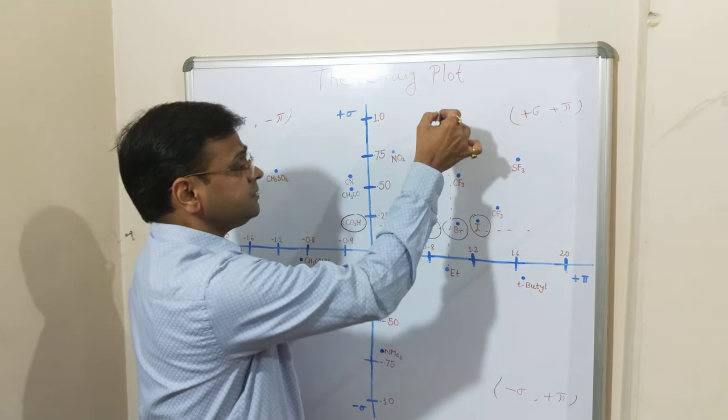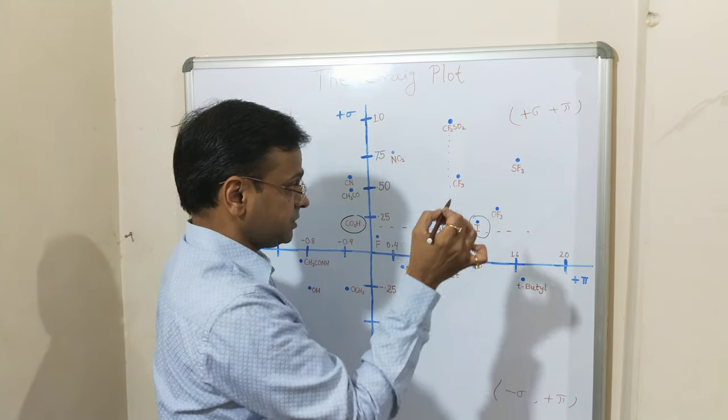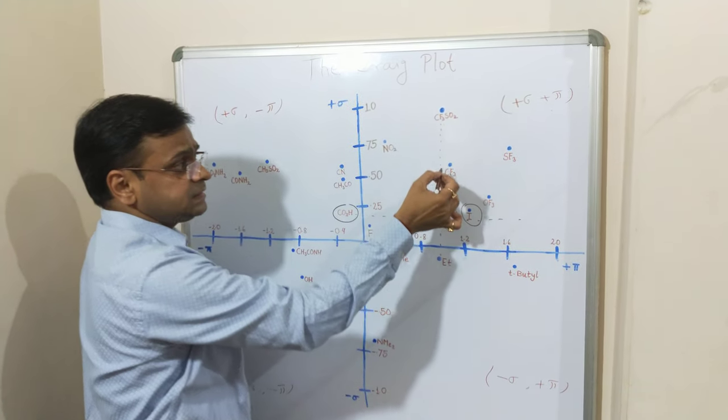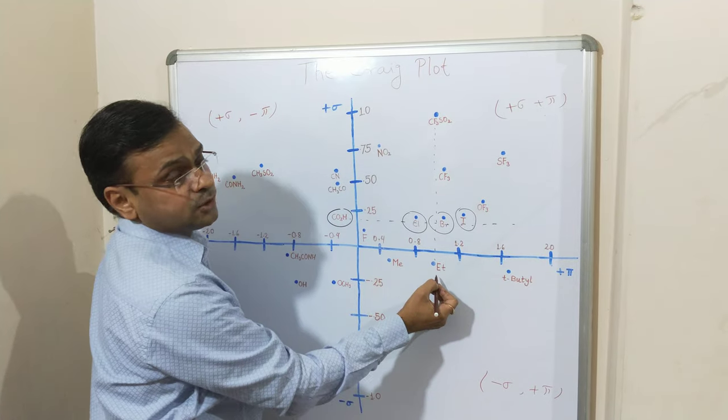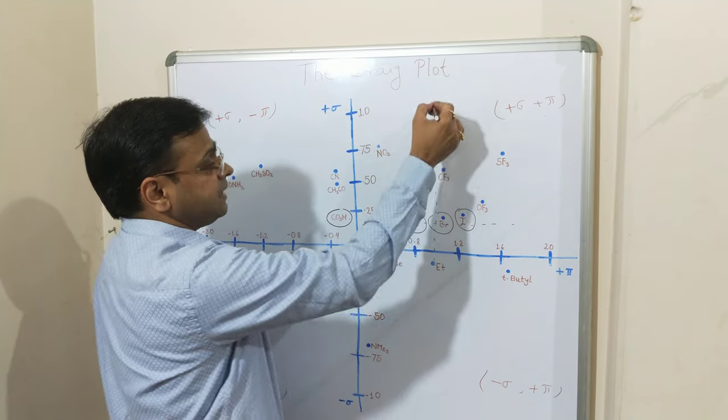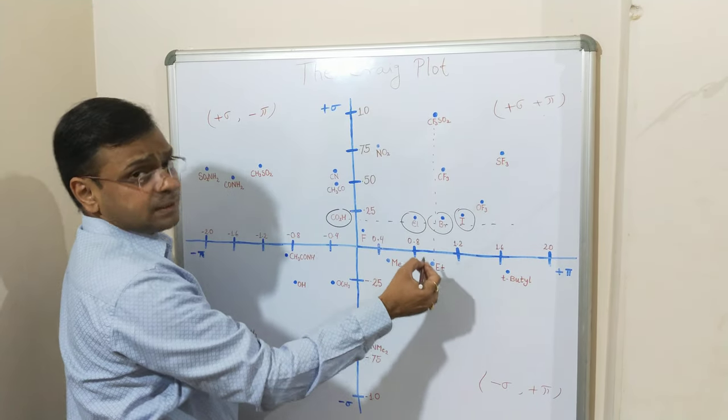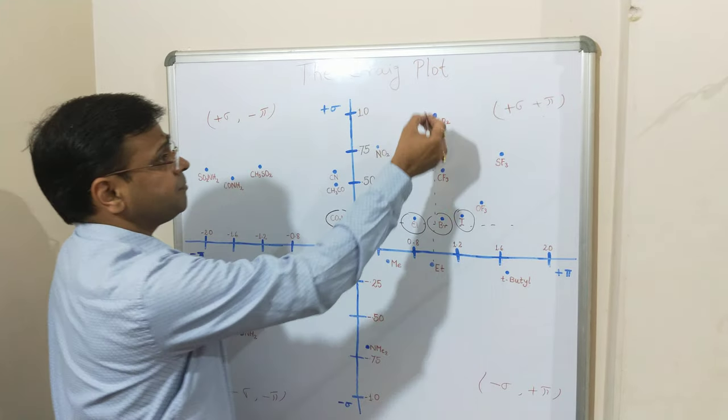If you draw a vertical line, for example in this case, iodo and others form or have similar or approximately similar pi value.